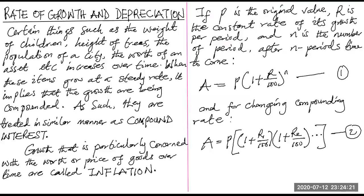Today we're talking about growth and depreciation. It is natural in life to see that certain things grow, such as the weight of children and adults, our ages, the height of trees, and the price of goods. The worth of assets also increases in price or value. When this increase has to do with goods and assets, we call that inflation.